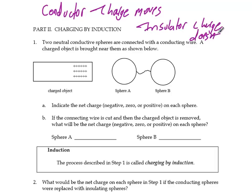So this part of this lab goes into a little bit of, well, how else besides rubbing two objects together can you make something charged? So it says two neutral conductive spheres are connected with a conducting wire. That means it will allow charge to flow. And these conductive spheres means that charge can flow. A charged object is brought near them as shown below. So this charged object is going to affect these things.